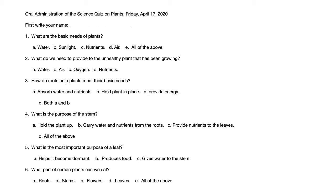Number 1. What are the basic needs of plants? A. Water. B. Sunlight. C. Nutrients. D. Air. Or E. All of the above.